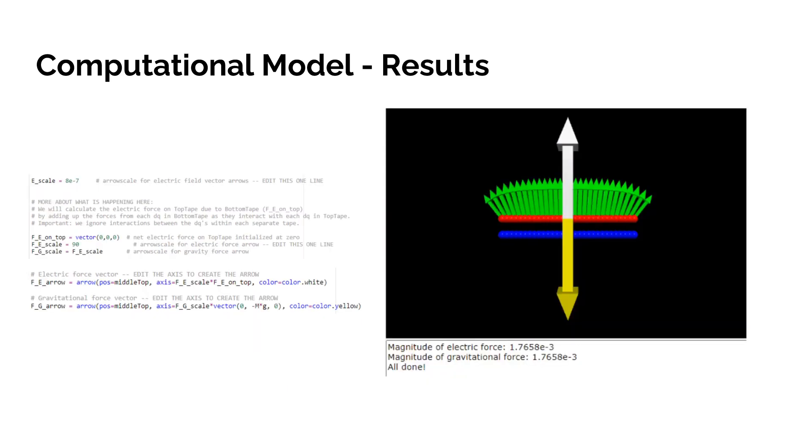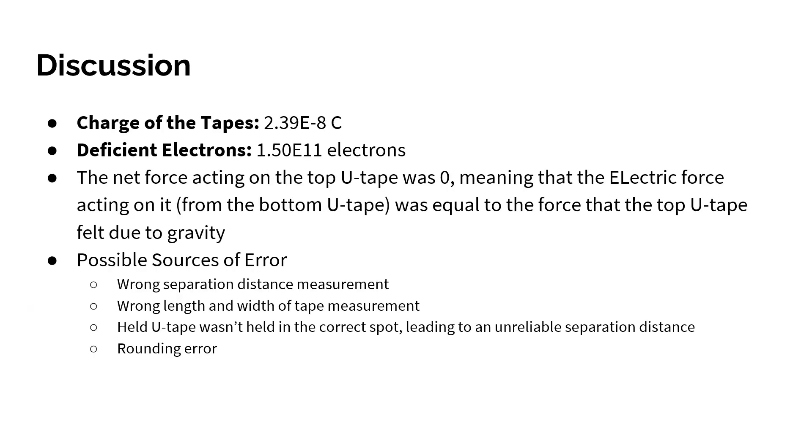The arrows and on the right is the results of the computational model. The charge of the tape based on a guess and check method as well as our estimation came out to be 2.39 times 10 to the negative 8 coulombs. For deficient electrons, we calculated that we were missing about 1.5 times 10 to the 11 electrons for it to be a neutral charge. We did this by dividing the net charge of the tape and dividing it by the charge of the electron.